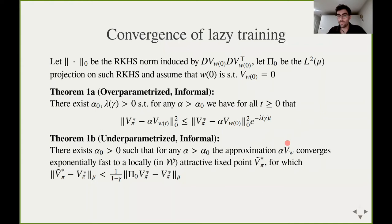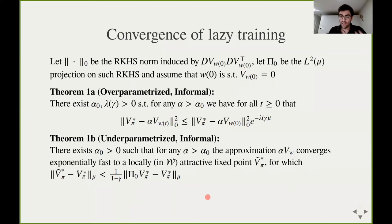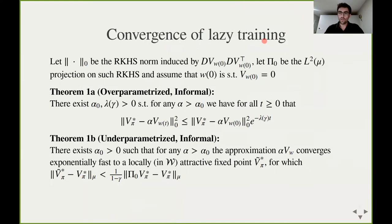On the other hand, when the kernel is degenerate, we cannot hope for global convergence to an optimum. The kernel is not sufficiently high-dimensional to capture the whole state space, so the best we can hope for is convergence to a local fixed point. We still have exponential convergence to a local fixed point, and we can characterize its distance from the projection of the global fixed point onto the limiting reproducing kernel Hilbert space. Summarizing: depending on the degeneracy of this kernel or the number of parameters in our model, we have either global convergence to a global optimum or convergence to a local optimum of the temporal difference dynamics.